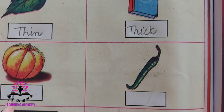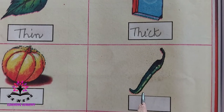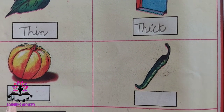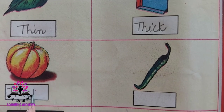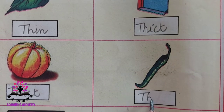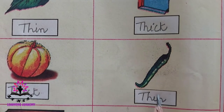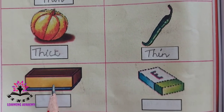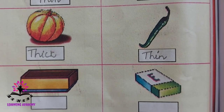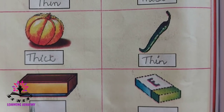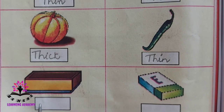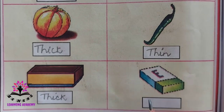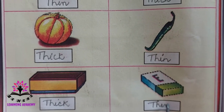They have given a pumpkin and a green chili. Which is thicker? The pumpkin is thicker than the green chili. See the last one — a matchbox and an eraser. Which is thicker? The matchbox is thicker than the eraser, and the eraser is thinner.